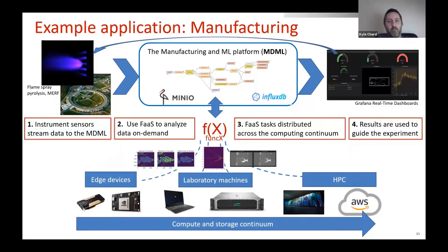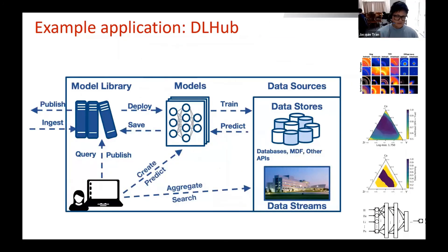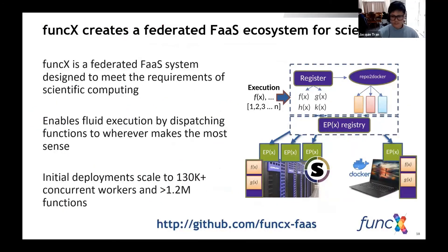With about one minute left, I'll fly through a couple of example applications. Most of this is focused on real-time computing associated with instruments. One example is flame spray pyrolysis at the MRF facility, where we use FuncX to run compute tasks as the flame is running so we can optimize it — ascending data from sensors to our HPC and GPU machines, running compute, and feeding results back to experimentalists who are changing conditions. Another example is work on COVID to understand the crystal structure of COVID proteins, where FuncX is part of a larger workflow shipping data from instrument to compute center.